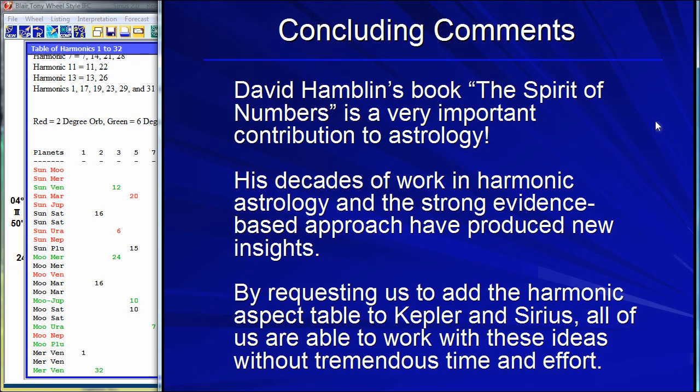Concluding comments: Hamblin's book, The Spirit of Numbers, is a great book. It's an important contribution to astrology — his decades of work in harmonic astrology, his strong evidence-based approach. He actually researches this, not just numerology; he spends huge amounts of time sorting through charts and comes up with great insights. By him requesting that we add this table to Kepler and Sirius, and we did that, we're now all able to have this information at our fingertips. Working together with the software and creative thinkers, we're able to put all this together and make it available to you.